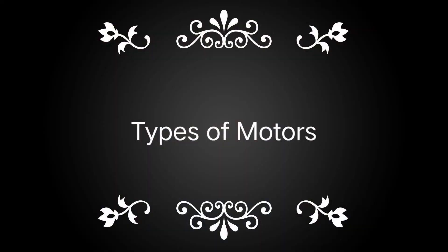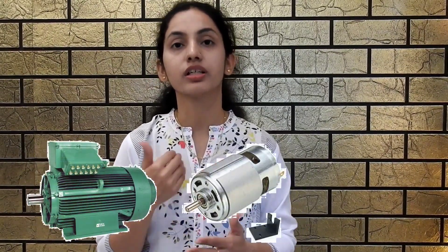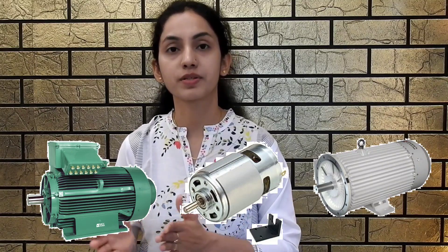In today's video we are going to discuss about motors — what are motors and what are the different types of motors. Motors are one of the primary mechanisms by which robots move. An electric motor is an electrical machine which converts electrical energy into mechanical energy. The types of electric motors are available in three main segments: AC motor, DC motor, and special purpose motors.